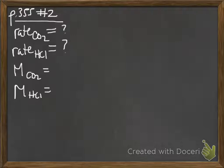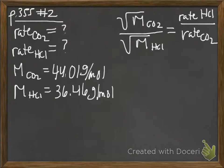So how many numbers do we have here? Here's the equation we have to work with. Square root of the mass of CO2 over the square root of the mass of HCl is equal to the rate of HCl over the rate of CO2.